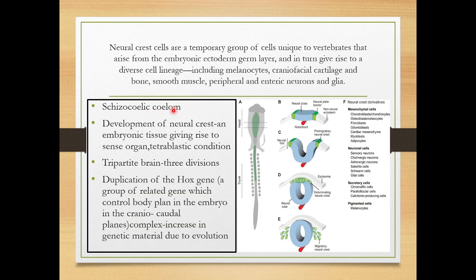There is a schizocoelic coelom. A true coelom is one which is covered by mesoderm. A schizocoelic coelom means the coelom is formed by the splitting of the mesoderm — 'schizo' means splitting or divided. There is also development of the neural crest, an embryonic tissue giving rise to sense organs, and tetraplastic conditions.